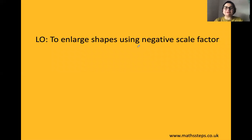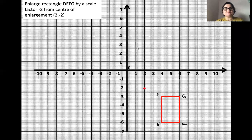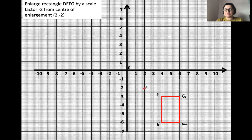Hello everyone, today we are going to learn how to enlarge 2D shapes using negative scale factor. This example involves enlarging rectangle DEFG by a scale factor of minus two from the center of enlargement at coordinates (2, -2), which I have plotted here. I'm going to call it point P.